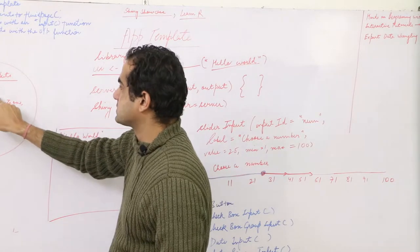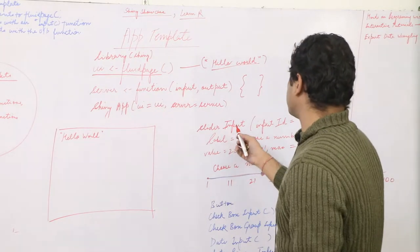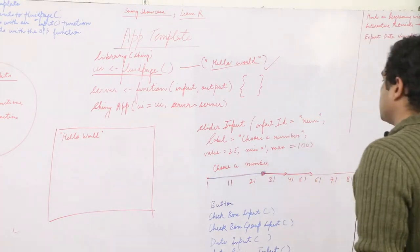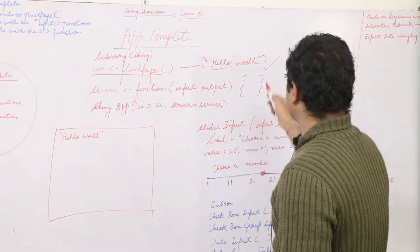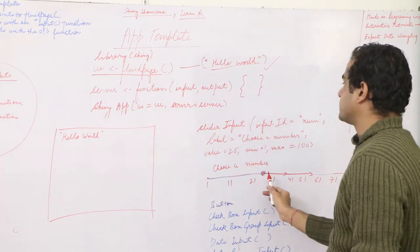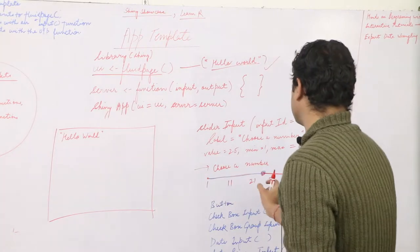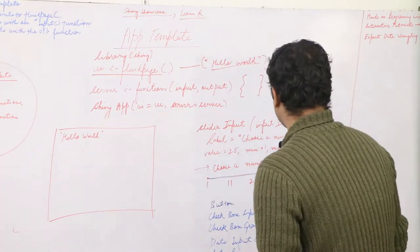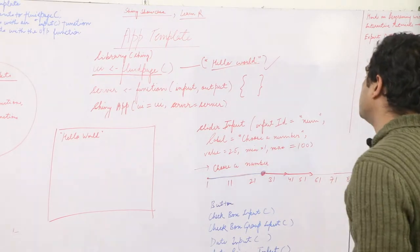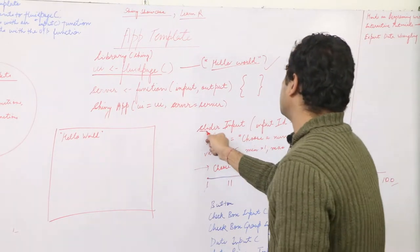In the fluid page syntax, input and output functions can be defined. For a slider input — if you want a line where you can choose a number — you define it in the fluid page section. For example: sliderInput with inputId equal to 'num', label 'Choose a number', value equals 25, min equals 1, and max equals 100. This gives you a slider where value 25 is the default, with a range of 1 to 100.